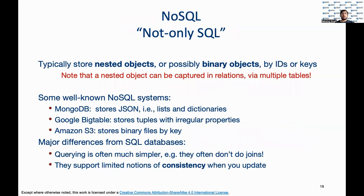NoSQL databases are non-relational databases that are typically stored in nested or binary objects. Querying NoSQL databases is simpler and slightly faster. Interestingly, these nested objects can be captured in relations through multiple tables, and therefore many NoSQL databases now have SQL interfaces.